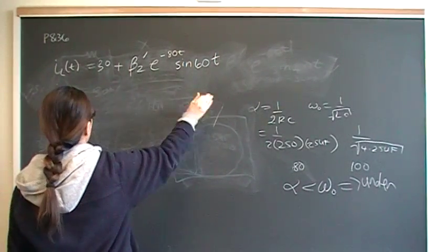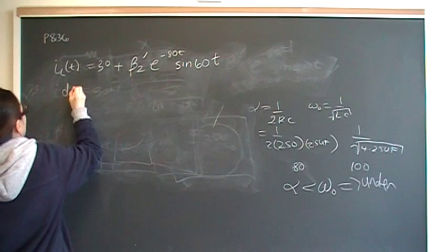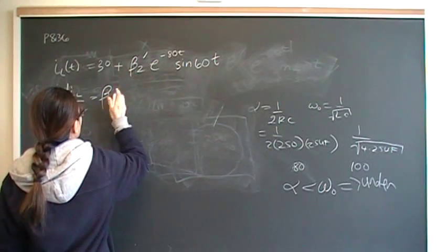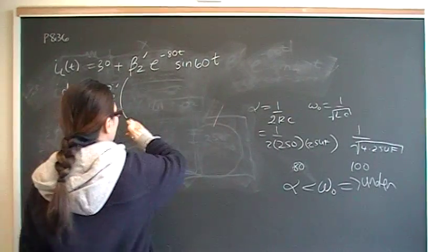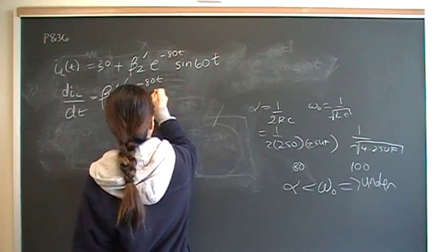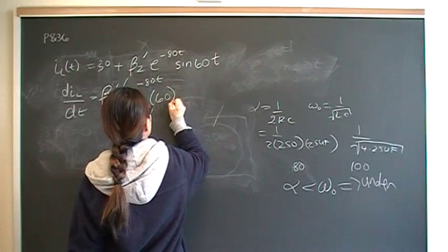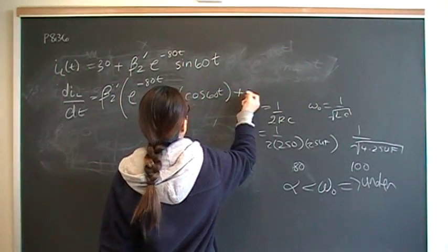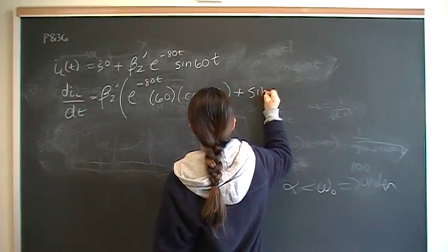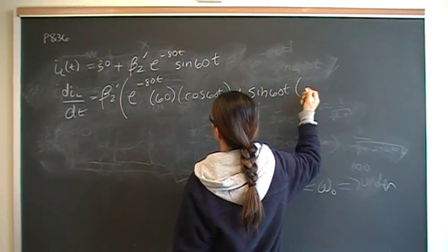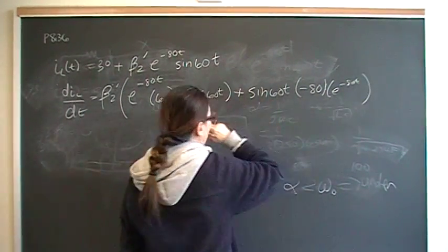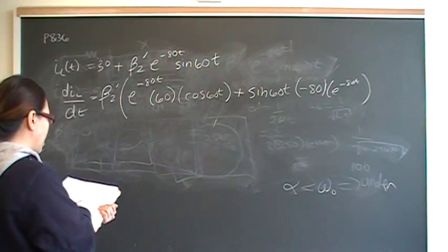We take the derivative of this entire thing with respect to T, gives us di L dt. This is a constant, it's just going to go away. Beta 2 prime is just a coefficient. Now we need to do the product rule for these guys in here. You fix e to the negative 80T, and then you take the derivative of sine, and that gives me 60 cosine 60T. Now you fix sine 60T times the derivative of E, so that's going to give me minus 80 times e to the minus 80T.